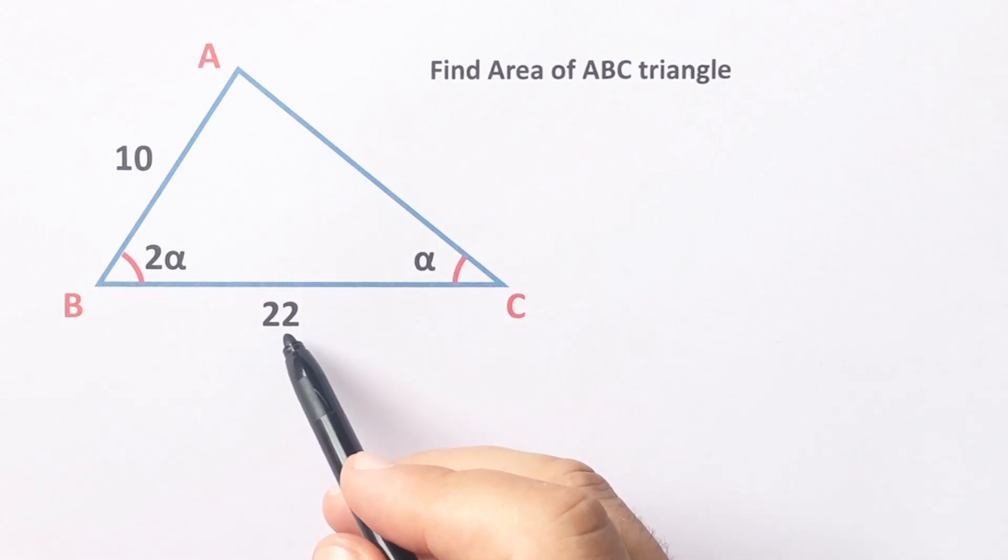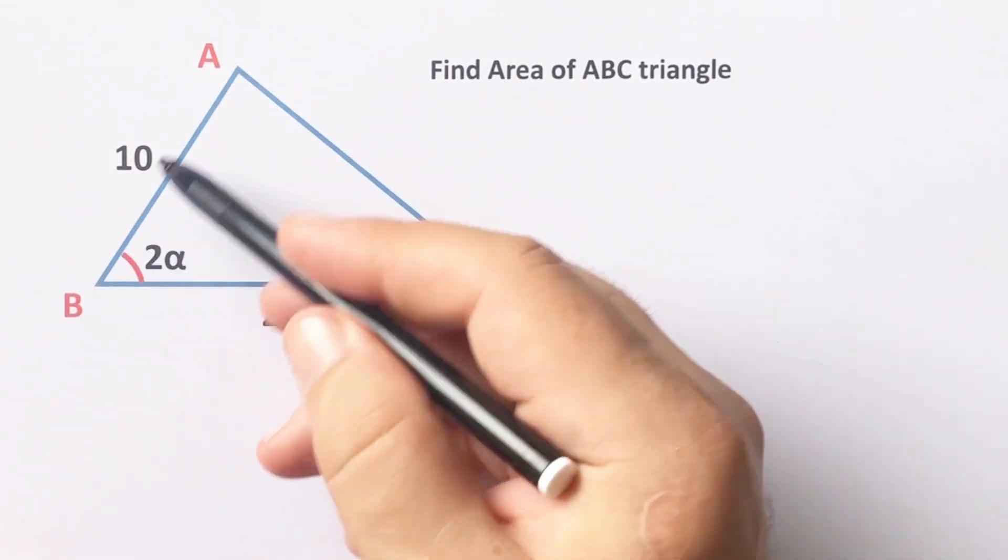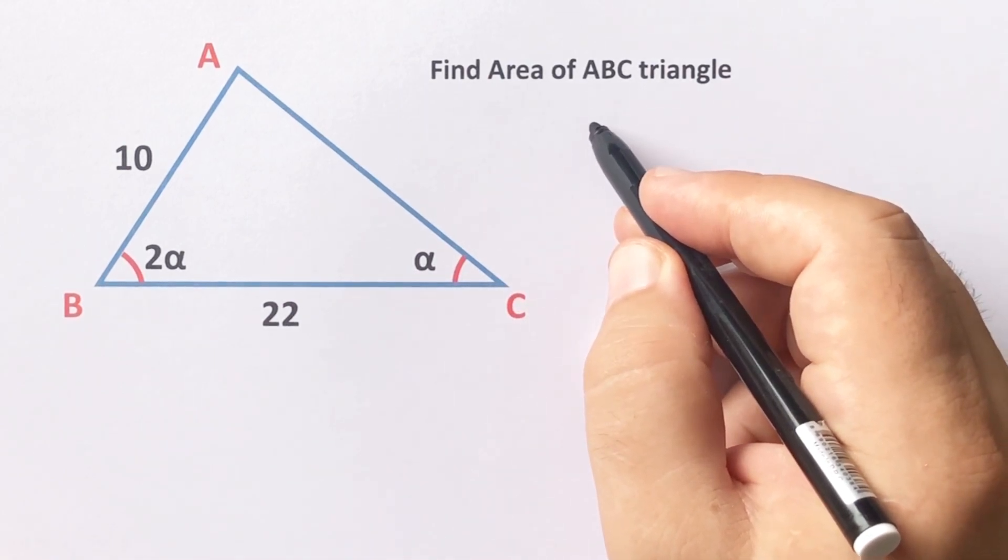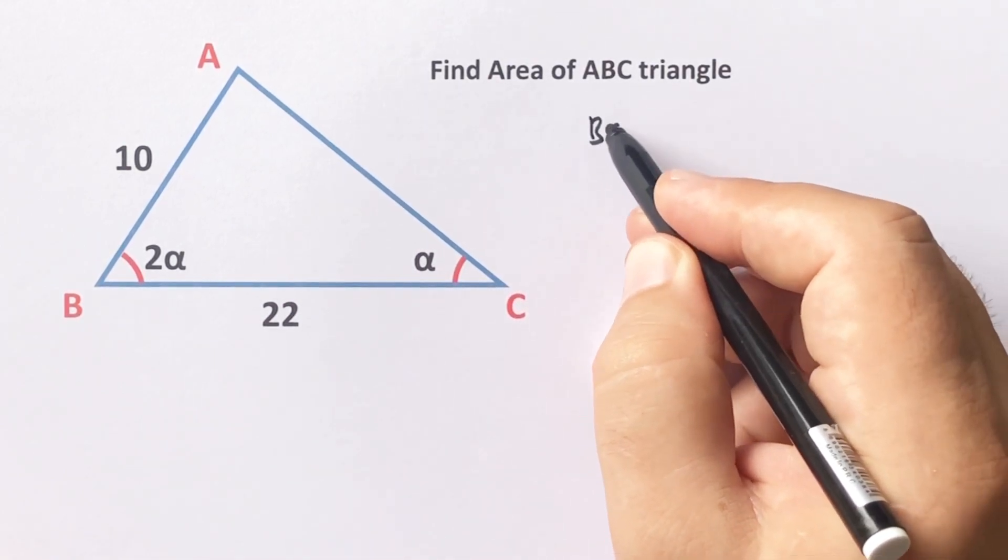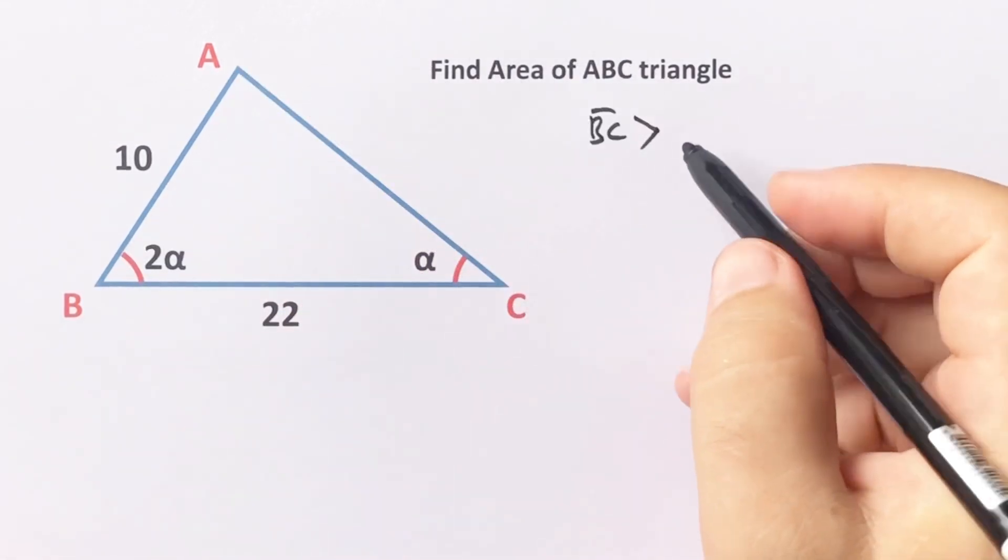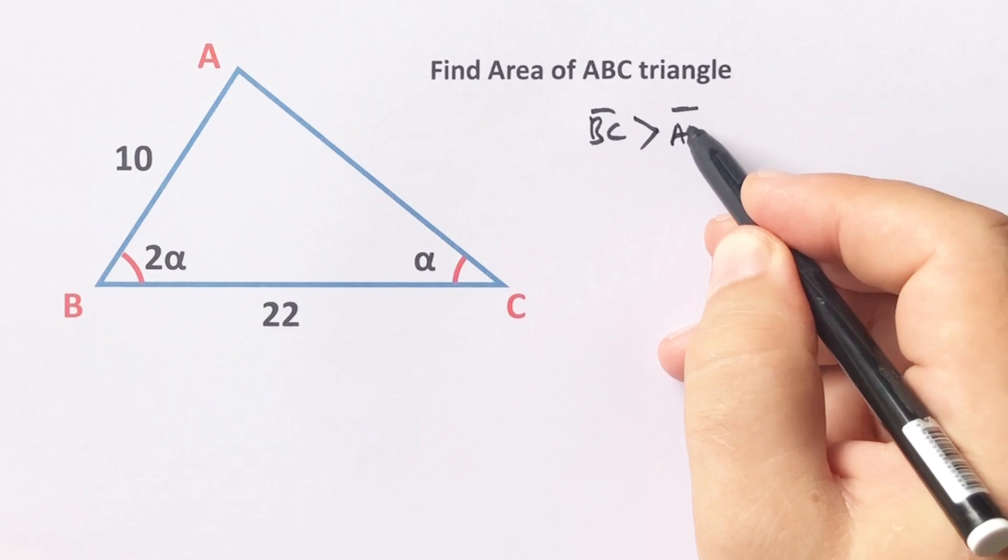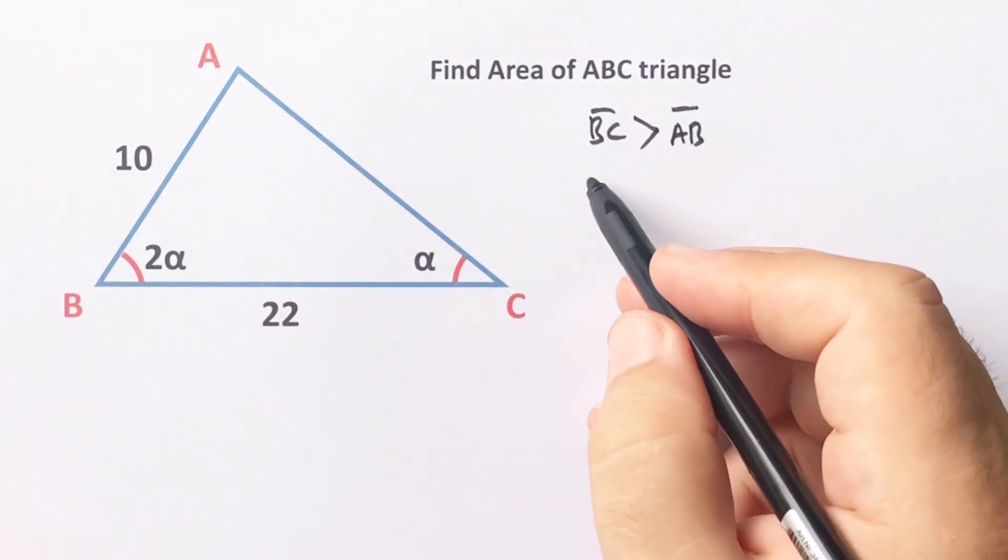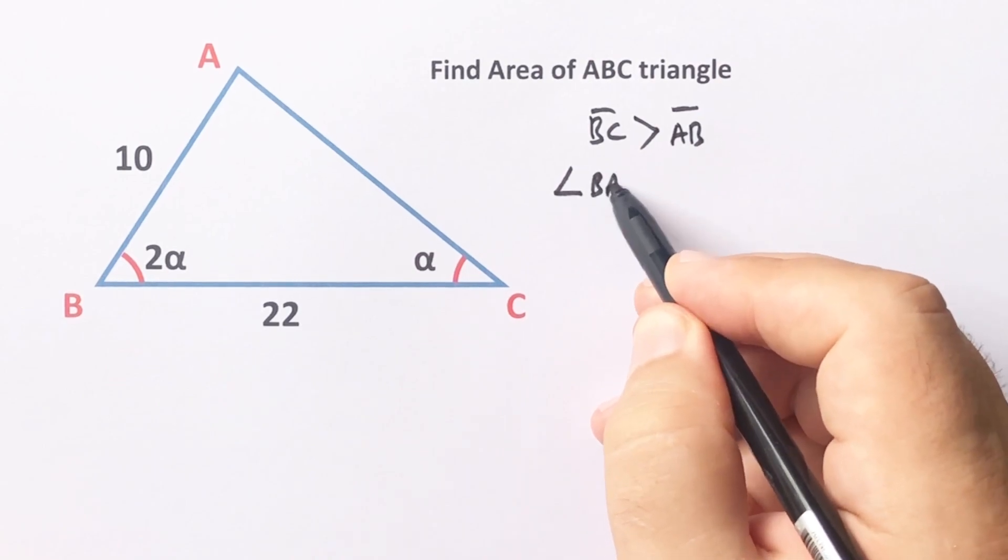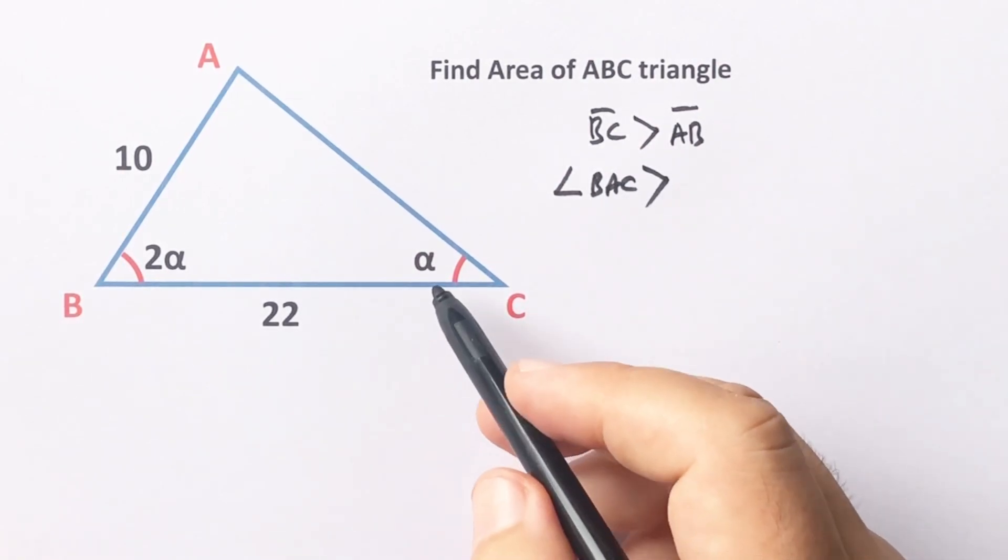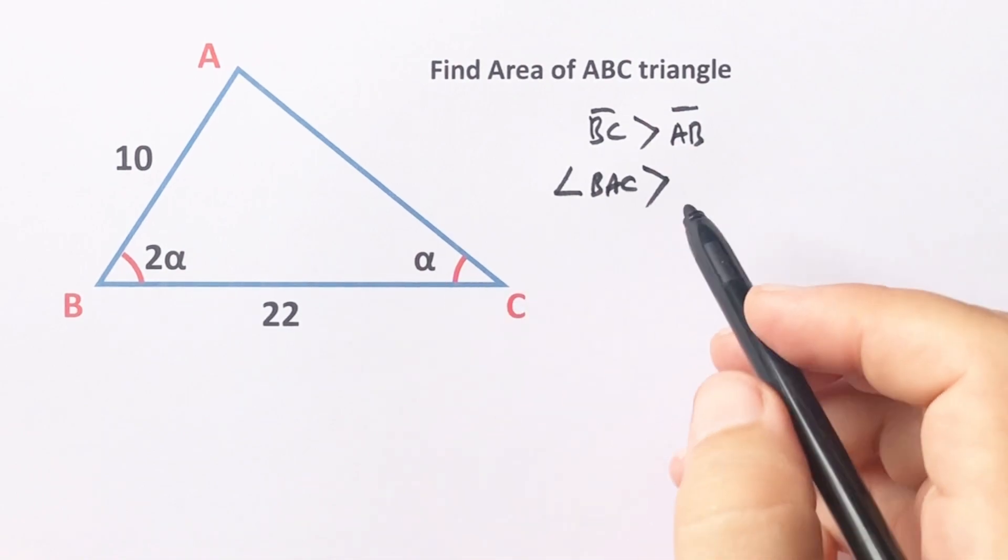Notice that this side is greater than this side, right? The length of BC is greater than the length of AB. That means the angle BAC must be greater than the angle ACB.